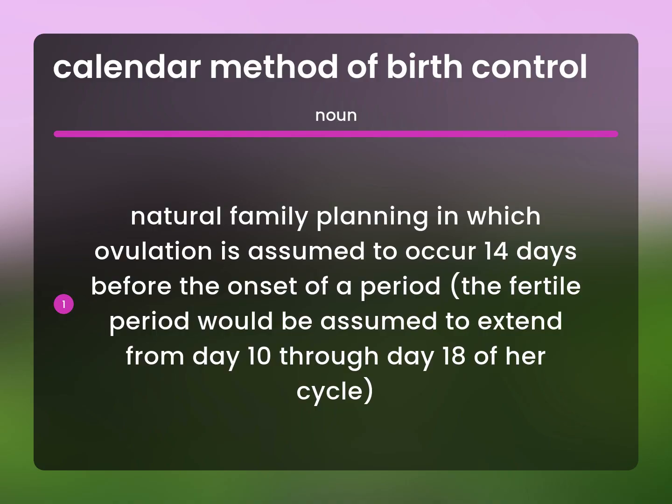Natural family planning in which ovulation is assumed to occur 14 days before the onset of a period. The fertile period would be assumed to extend from day 10 through day 18 of her cycle.